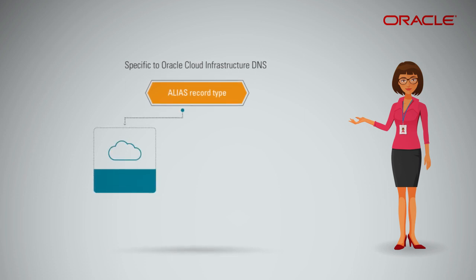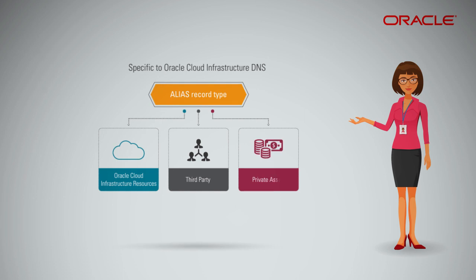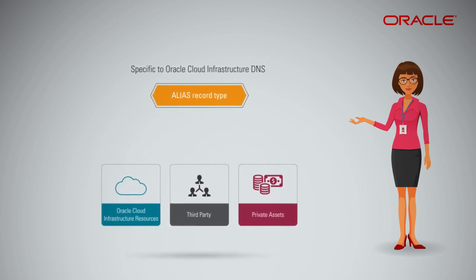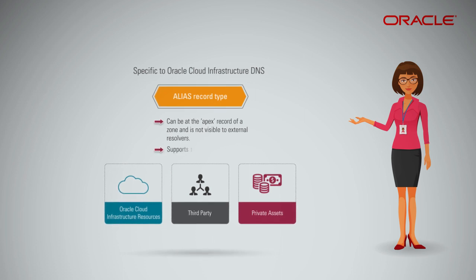The alias record can be used to map to various Oracle Cloud Infrastructure resources, like compute, network, database or storage, as well as third-party or private assets. The alias record acts similar to a CNAME record, with the difference being that it can be at the apex record of a zone and is not visible to external resolvers. Alias record types support only A and Quad A queries.